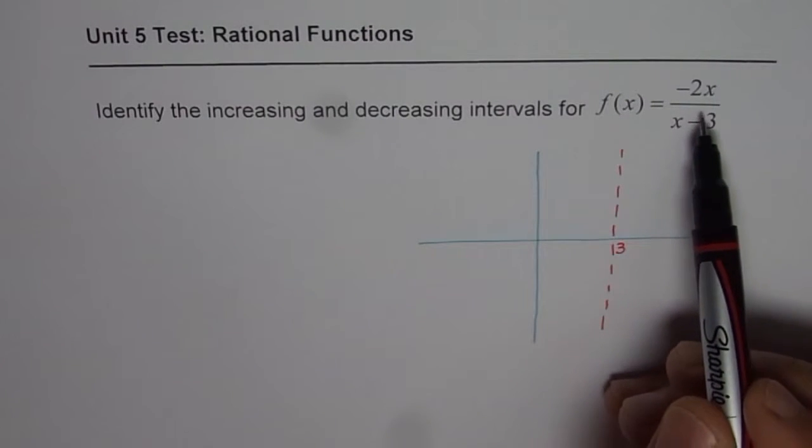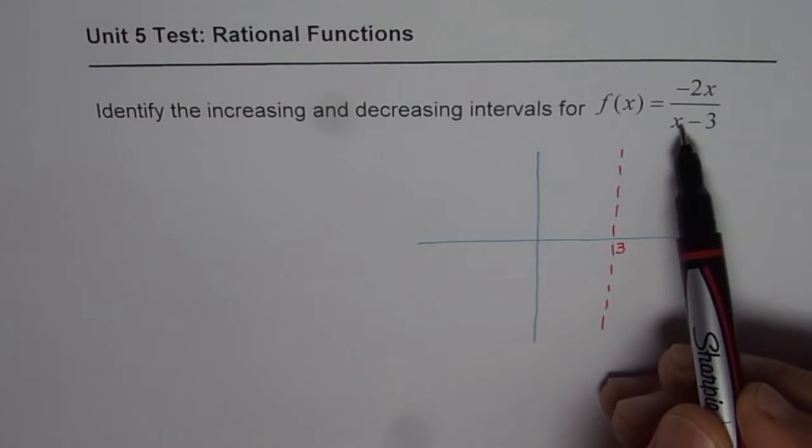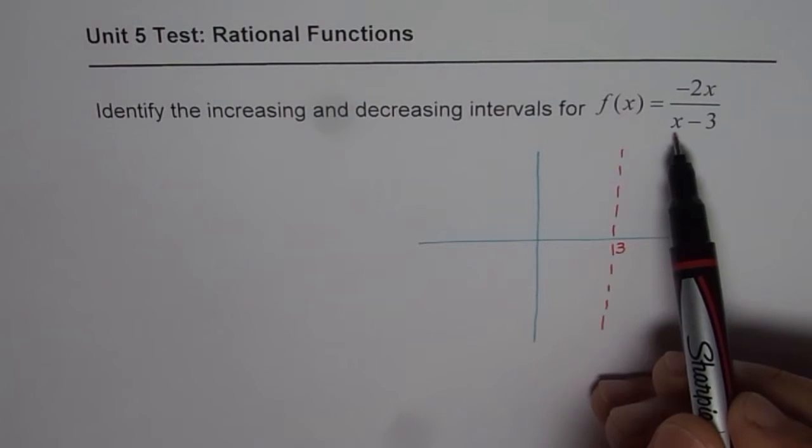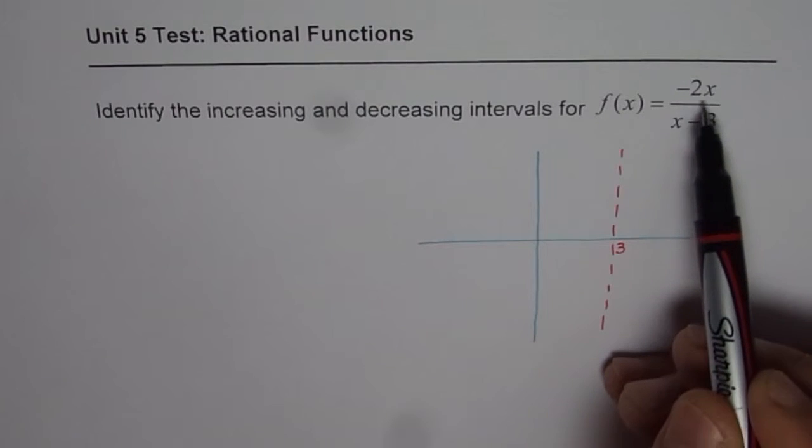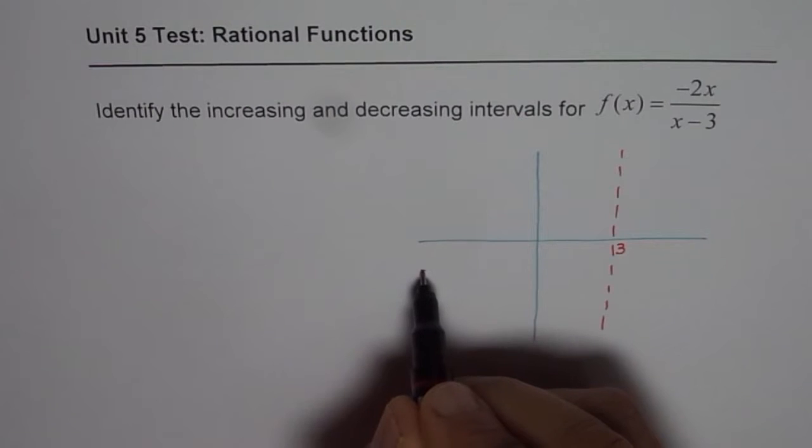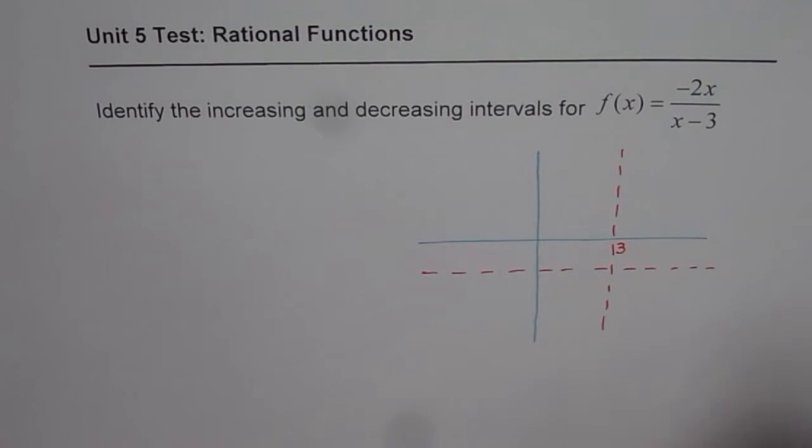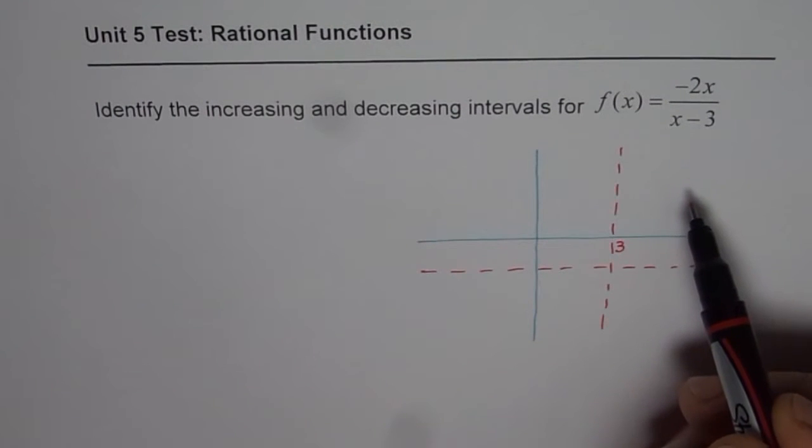Then compare the degrees of numerator and denominator. It is 1 each. Therefore we have a horizontal asymptote which is ratio of leading coefficients minus 2. So let's say this is minus 2 for us. See how easy it is. First look for the asymptotes.